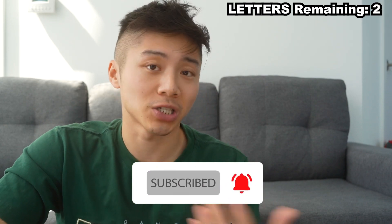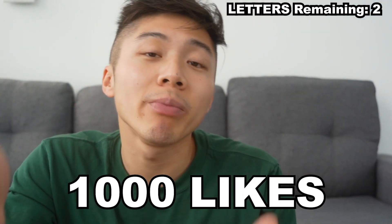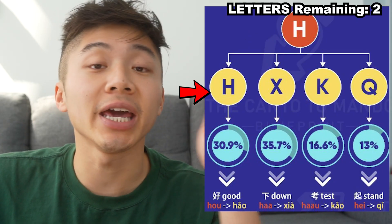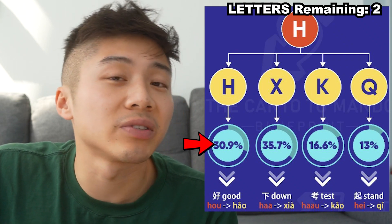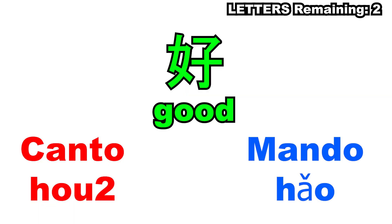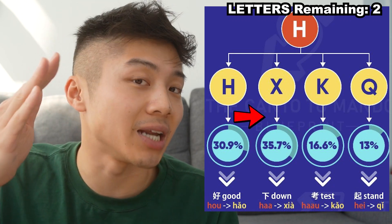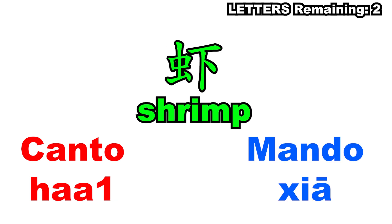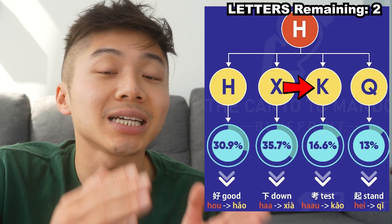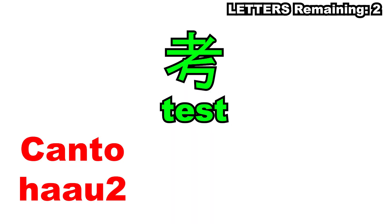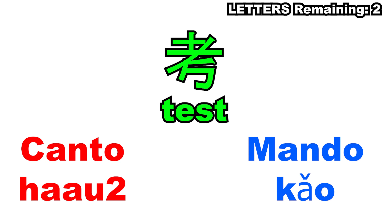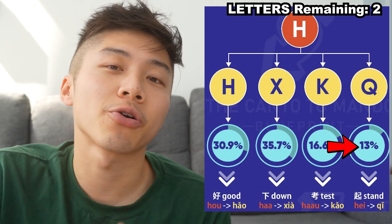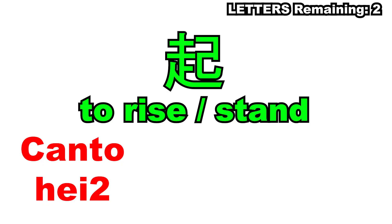Only two more to go — these are both big ones. If you found this helpful, please subscribe below. Next one is H, and H can become H, X, K, or Q. About 31% of the time H just stays H — so 'hou' for good becomes 'hao'. About 36% of the time it becomes X — so 'haa' for down or shrimp becomes 'xia' in Mandarin. H becomes K about 17% of the time — so 'haau' for to test becomes 'kao shi'. And finally, H becomes Q about 13% of the time — so 'hei' meaning to stand up becomes 'qi' in Mandarin.